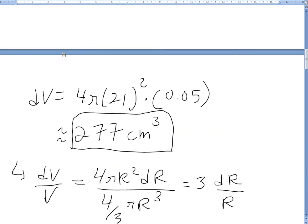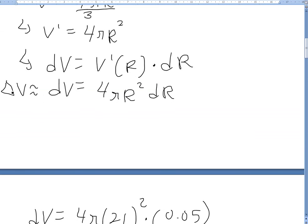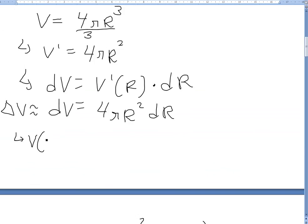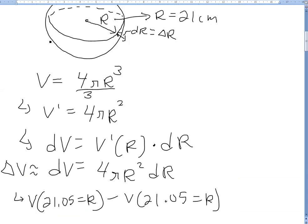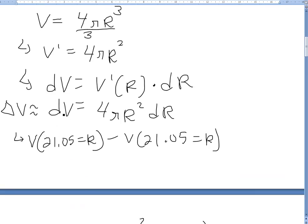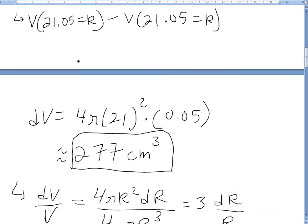And again, if you wanted to get the exact difference, you would basically have to calculate this delta V, or in other words, find V of 21.05 equals R, and then you plug it in, then you would subtract by V of 21. So inside this function right here, but we're just using the approximation way as explained in my earlier videos.